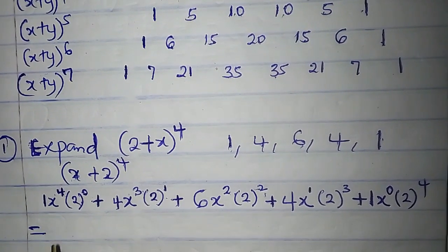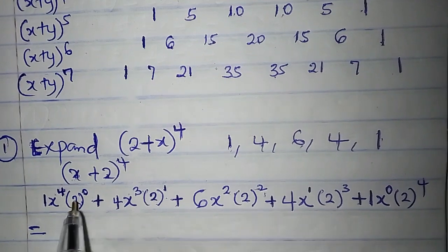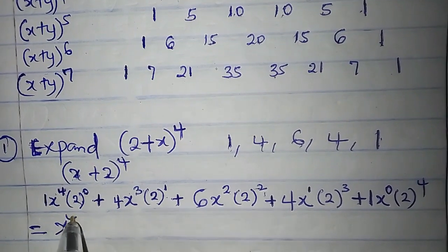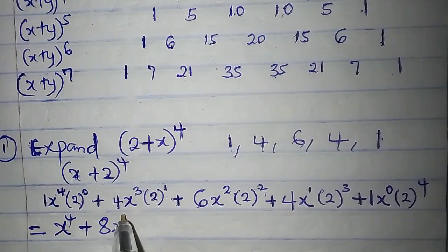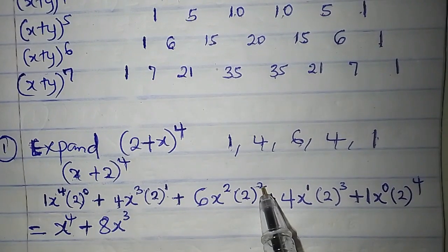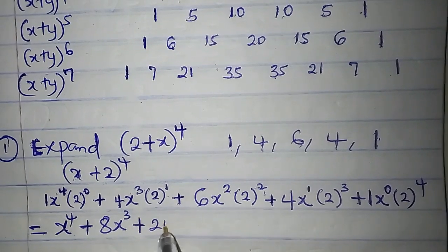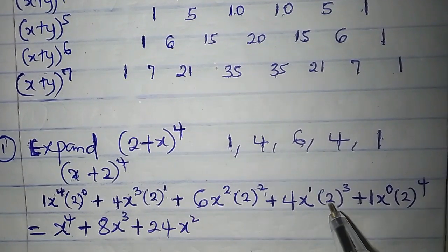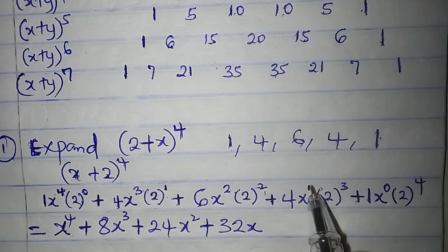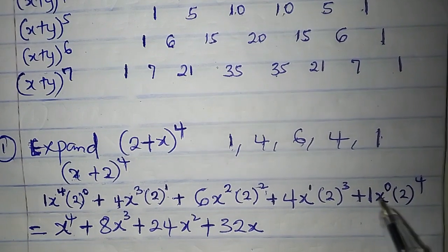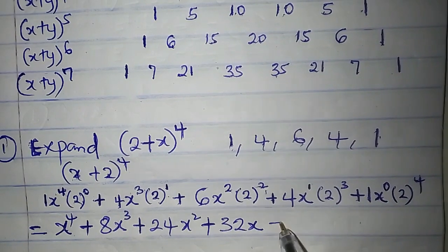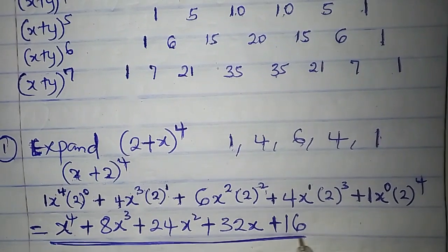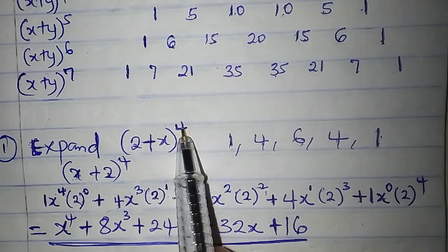So let's simplify it. x to the power of 4 times 1 is x to the power of 4; 2 to the power of 0 is 1, so everything here is x⁴. 2 to the power of 1 is 2; 2 times 4 is 8, so 8x³. 2 to the power of 2 is 4; 4 times 6 is 24, so 24x². 2 to the power of 3 is 8; 8 times 4 is 32, so 32x. x raised to the power of 0 is 1; 2 raised to the power of 4 is 16.